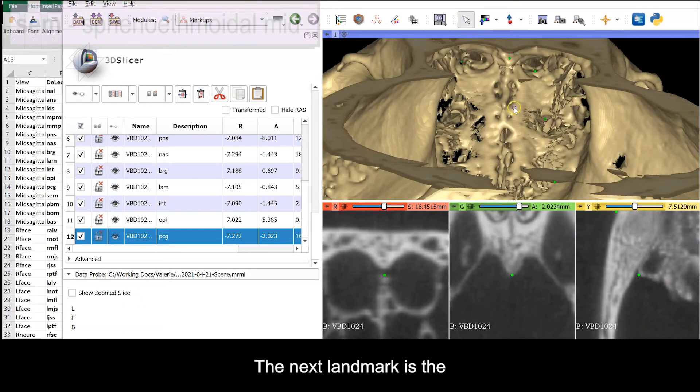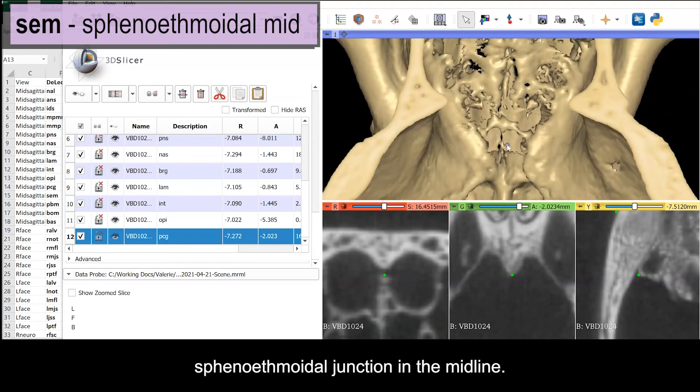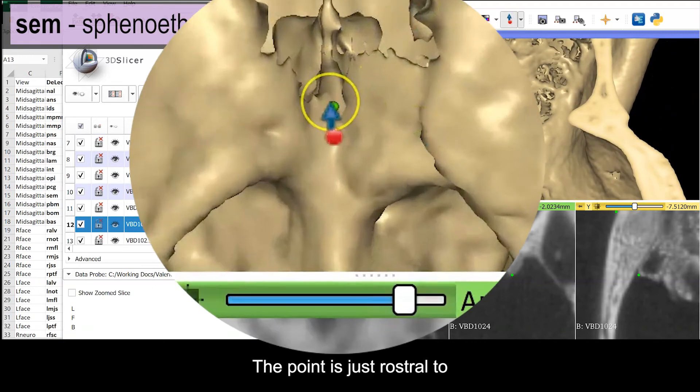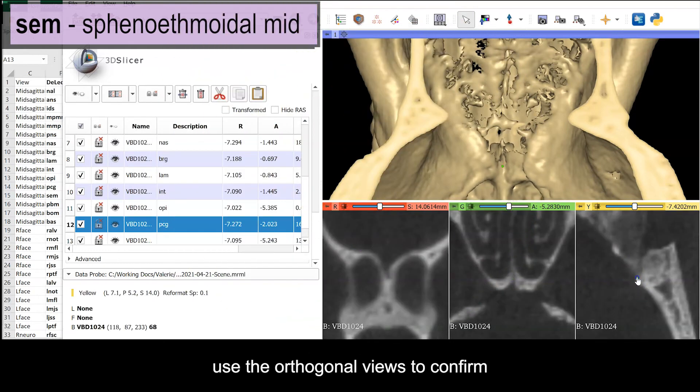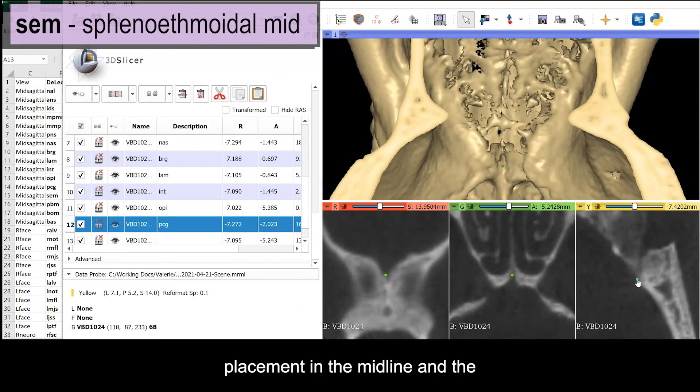The next landmark is the sphenoethmoidal junction in the midline. The point is just rostral to the optic canals. Here again, use your orthogonal views to confirm placement in the midline and the sagittal view in particular to be sure the point is at the junction between the sphenoid and ethmoid.